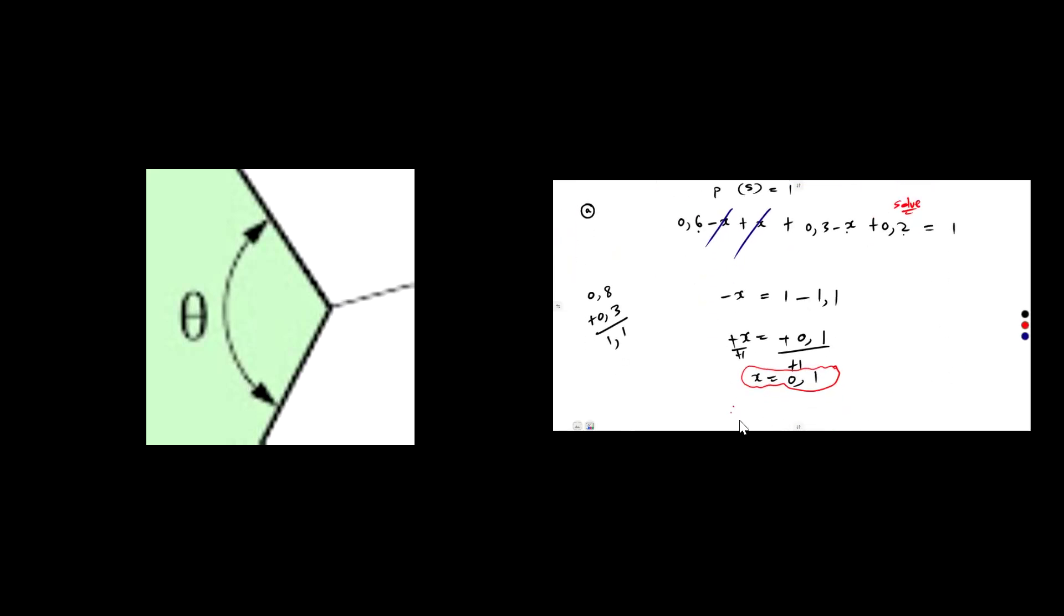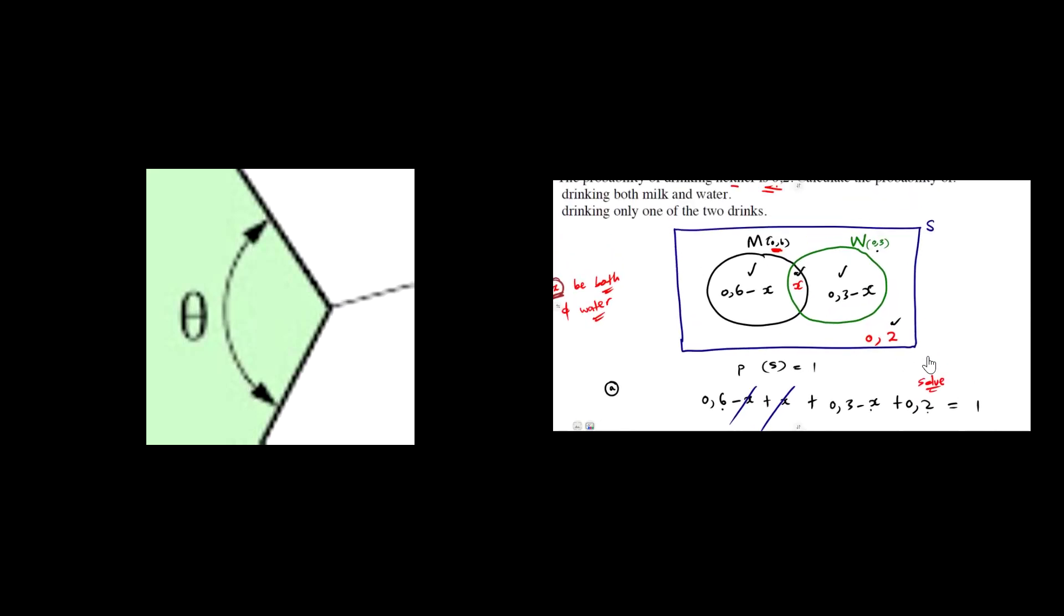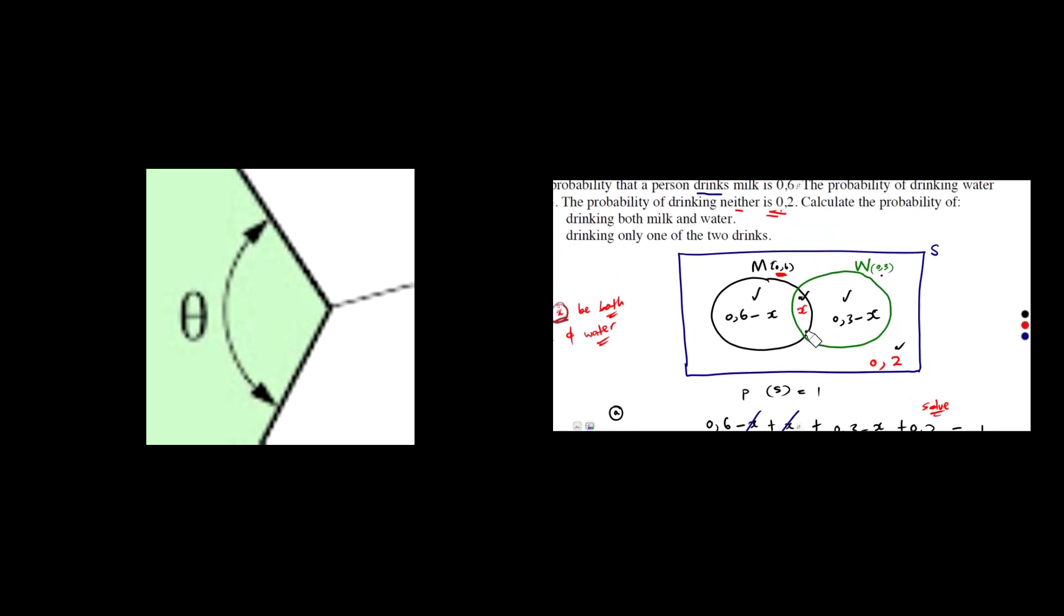That's the condition here. So therefore, the probability of drinking both milk and water is 0.1. Just like that. That is wherever we see the X, it's 0.1. We can find this one by subtracting.